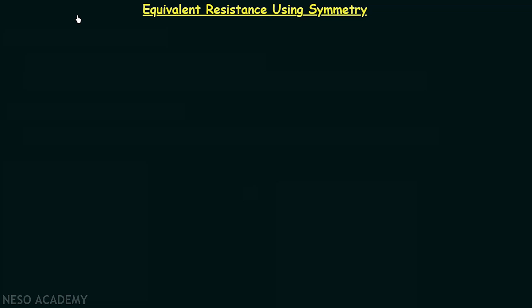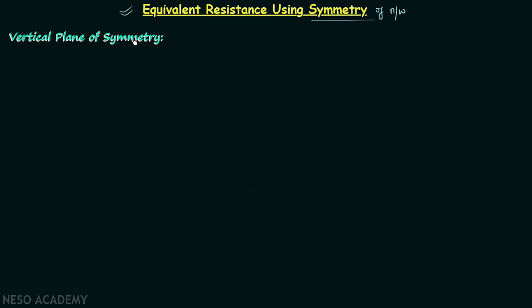Now we are going to understand how to calculate the equivalent resistance using the symmetry of the network. To understand this topic clearly we must know what is vertical plane of symmetry and horizontal plane of symmetry. We will begin our discussion with vertical plane of symmetry, in short known as VPS.